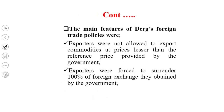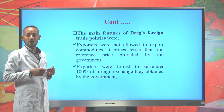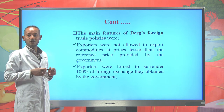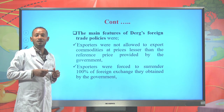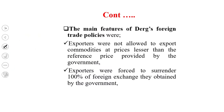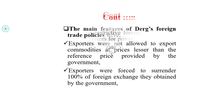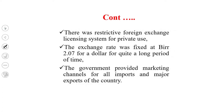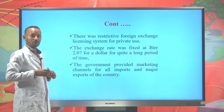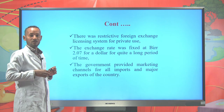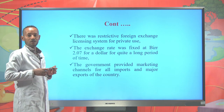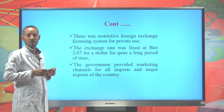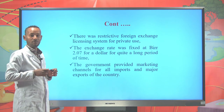The features of the foreign trade policy of the DERG regime: exporters were not allowed to export commodities at prices less than the reference price provided by the government. Exporters were forced to surrender 100% of the foreign exchange they obtained to the government. There was a restrictive foreign exchange licensing system for private use. The exchange rate was fixed at about 2.07 ETB per USD for quite a long period, and the government provided marketing channels for all imports and major exports.